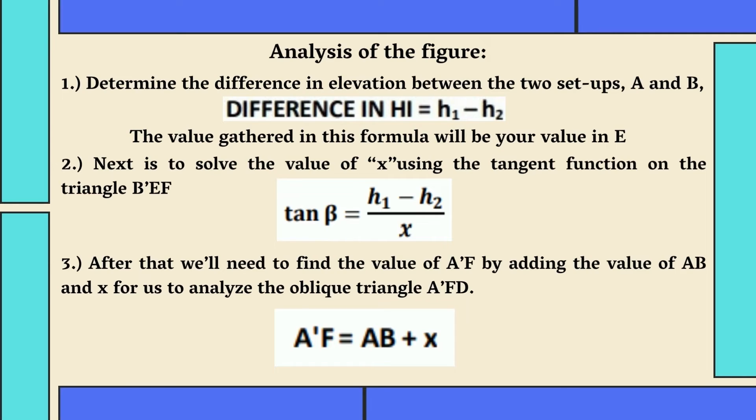Next, we'll solve for X using the tangent function on the right triangle by using tan beta equals H1 minus H2 all over X. After that, we'll need to find the value of AF by finding the value of AB and X for us to analyze the oblique triangle AFD using the formula AF equals AB plus X.